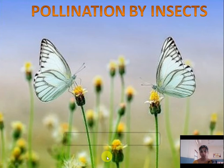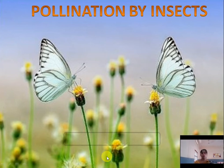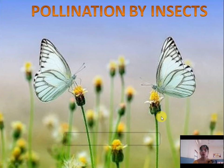Most insect-pollinated flowers produce nectar — that's why insects visit the flower. Most insect-pollinated flowers also have a sweet smell, like the smell of rose and jasmine. They are sweet-smelling, producing nectar, and bright colored to attract insects. The pollen grains of these flowers are sticky, so when insects visit the flower, the pollen sticks to their body.